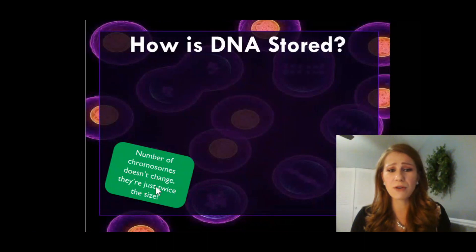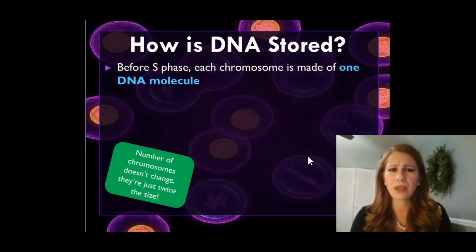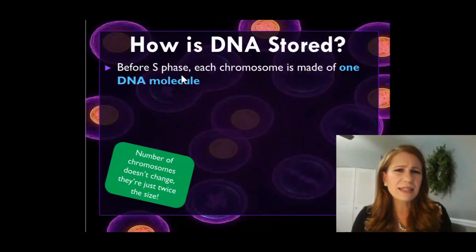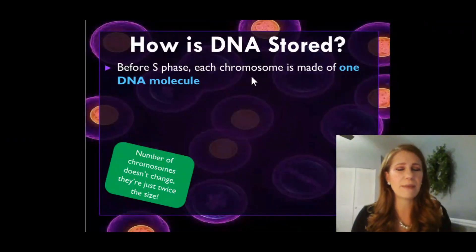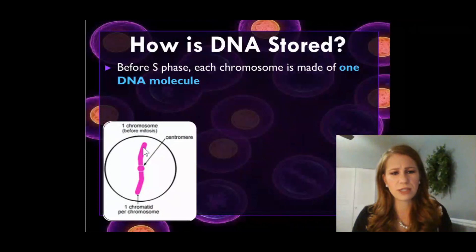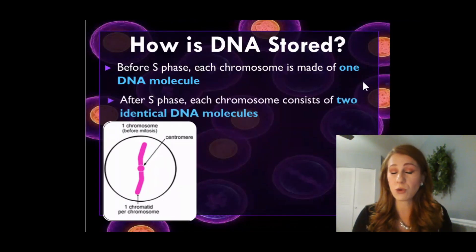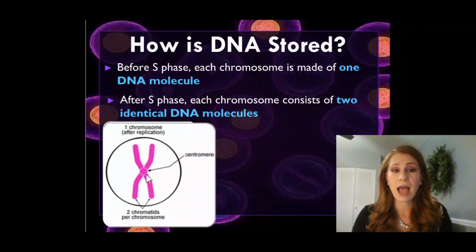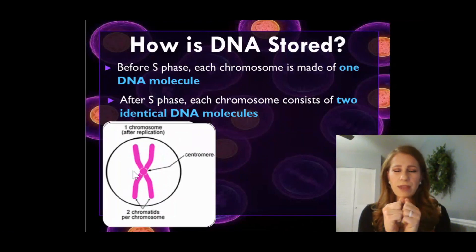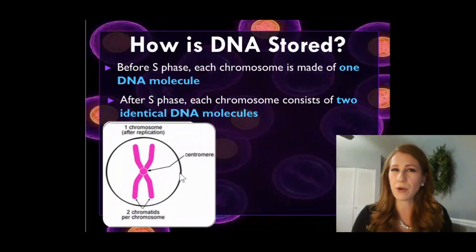Now, how is DNA stored? Our number of chromosomes doesn't change — they're just twice the size. Before S phase, each chromosome is made of one DNA molecule. S phase is when we synthesize an extra copy of DNA, so we have one single chromosome before mitosis with a centromere. After S phase, we have two identical DNA molecules — a clone of the original. They still attach at the centromere, that center point that holds on to each copy so they don't float away or get lost.